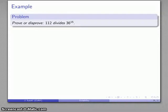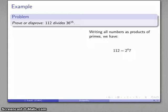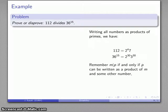Similarly, I want to prove 112 divides 36 to the 15th or not. And again, we'll write all of our numbers as products of primes. 112 is 2 to the 4th times 7. 36, 2 squared times 3 squared. Raise that to the 15th is 2 to the 30th, 3 to the 30th. And let's see. So I'd like to write this number as a product of this number and something else.